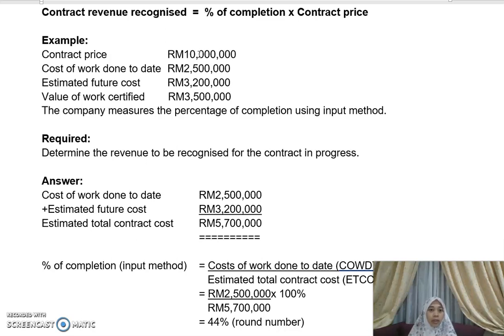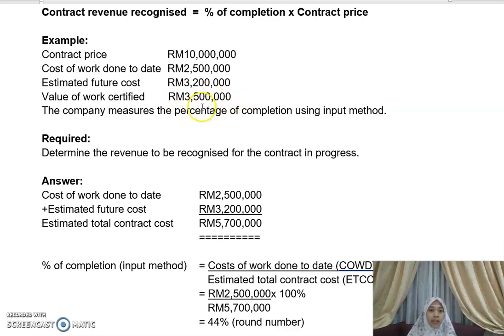Based on the accounts prepared, the cost of work done to date is 2.5 million. The estimated future cost — the cost needed to complete the contract — is another 3.2 million. Up to now, the value of work certified by the surveyor is 3.5 million. If the company measures percentage of completion using the input method, let's calculate.